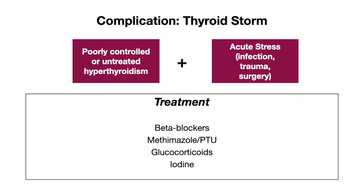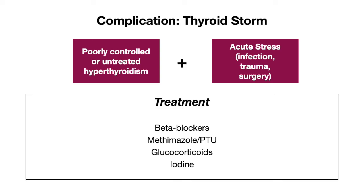Treatment of thyroid storm includes four main things: beta blockers, methimazole or PTU, glucocorticoids, and iodine. Beta blockers work by counteracting the increased beta adrenergic response seen with excess thyroid hormone. Methimazole and PTU are the antithyroid drugs given to inhibit thyroid hormone synthesis. Glucocorticoids are given because they reduce T4 to T3 conversion and may have a direct effect on the underlying autoimmune process. Finally, iodine is given — which may seem counterintuitive — but this is due to a phenomenon known as the Wolff-Chaikoff effect, where ingested iodine acutely inhibits thyroid hormone synthesis. Essentially, you give a large amount of iodine and the thyroid gland shuts down and stops producing thyroid hormone.